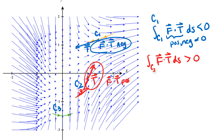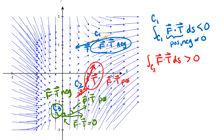For curve C3, in some places the F vector and T vector form almost a right angle, in some places an acute angle, and in some places an obtuse angle, and they pretty much balance out. When F and T are orthogonal, F dot T is zero. At the front of C3 I'd have positive F dot T from the acute angle, but on the back end I'd have negative F dot T from the obtuse angle. Adding it all up along C3 gives approximately zero — some help and some push against the motion, with net effect near zero.